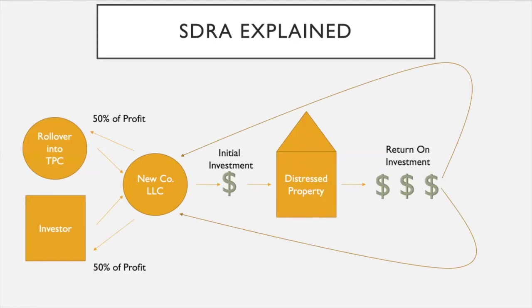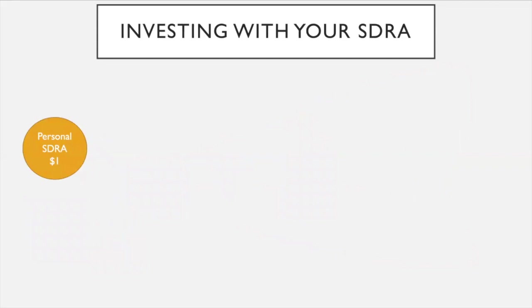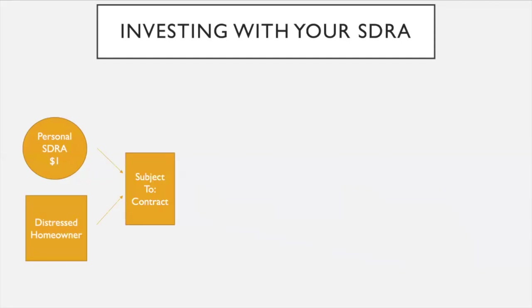This is a great example of how you can use other people's money as the investor. Now I'm going to show you how to make an insane return using your own self-directed retirement account. Let's say you open a brand new self-directed retirement account with a third-party custodian and deposit just $1. Your self-directed retirement account, with checkbook control, starts finding distressed properties and homeowners to work with. You meet a distressed homeowner who's about to be foreclosed on and possibly face bankruptcy. You and your self-directed retirement account step in, negotiate, and create a subject-to financing contract.